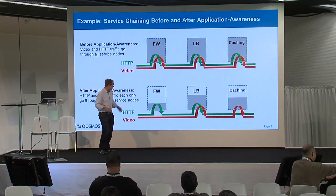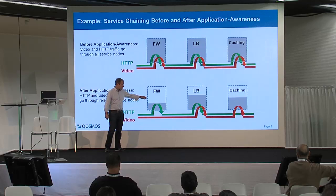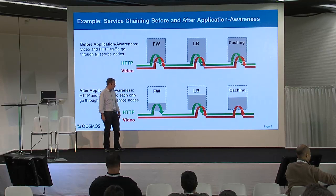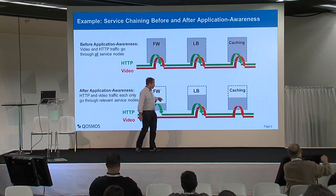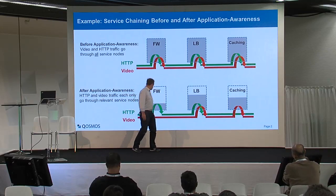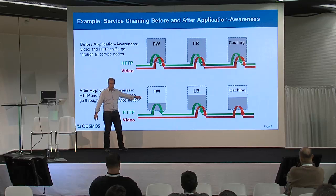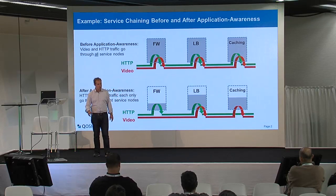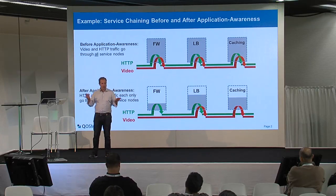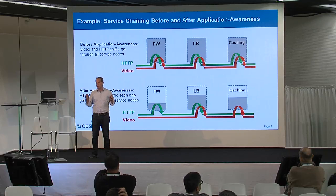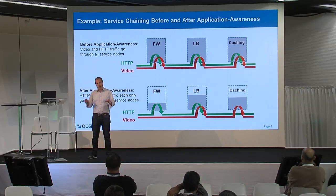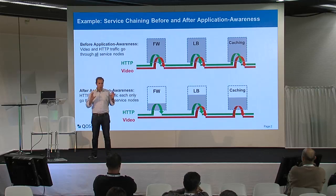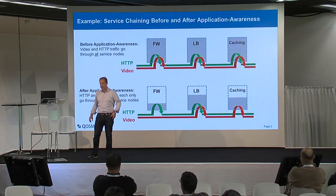Typically in this example, you'd like to have HTTP flows going to load balancing and firewall, but video might not go to firewall because there is not much threat to find inside videos. So the general idea of application-aware service chaining is to build service chains which are subscriber-aware and application-aware, which is not the case today.